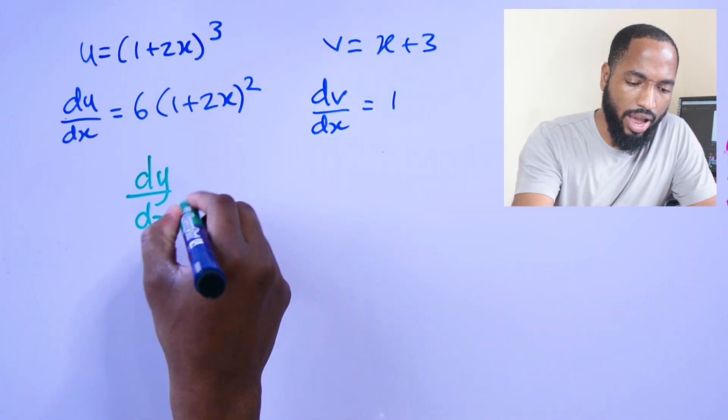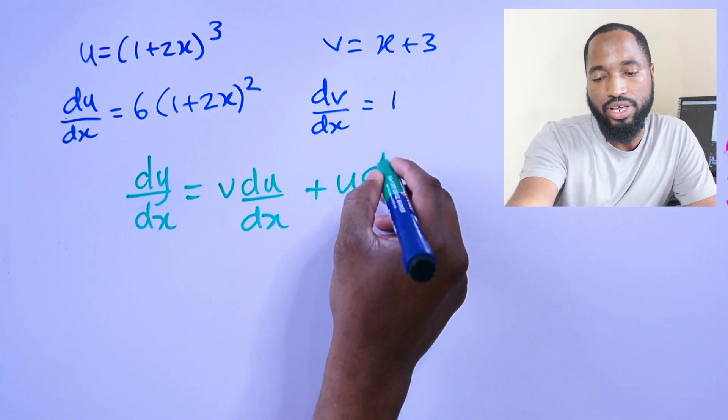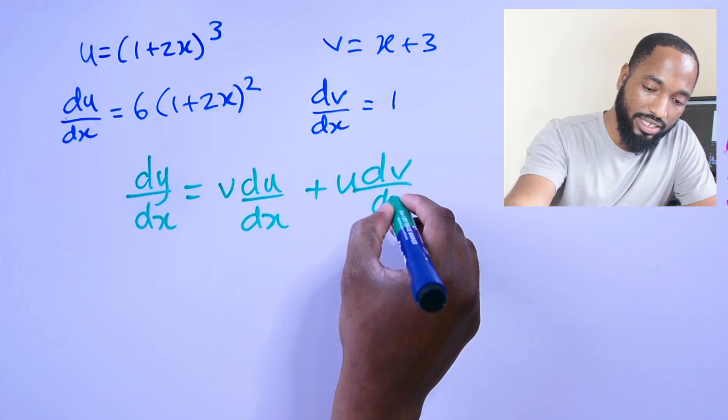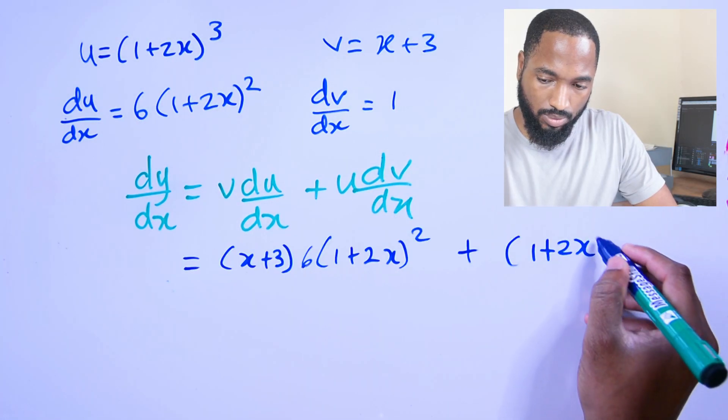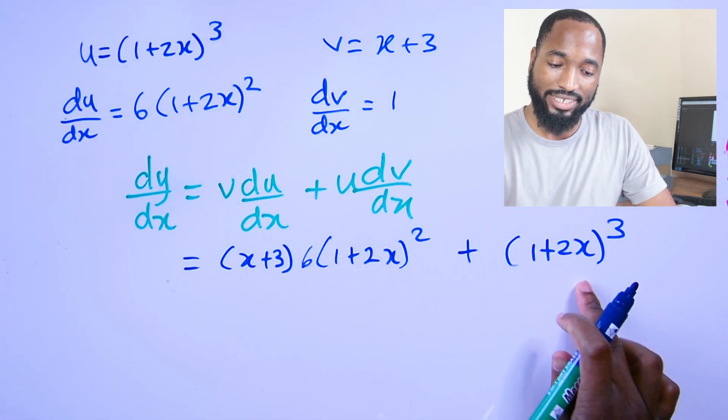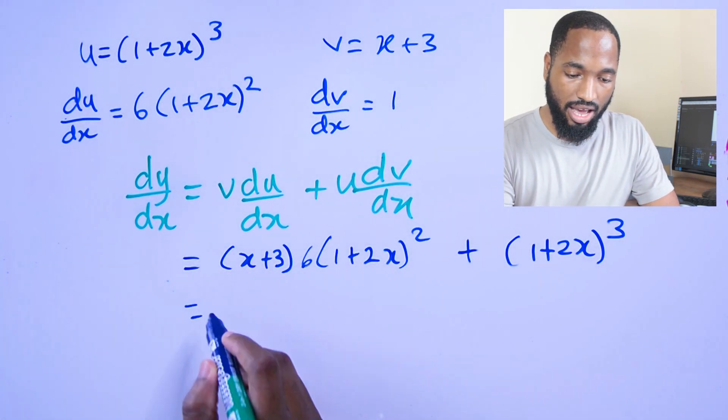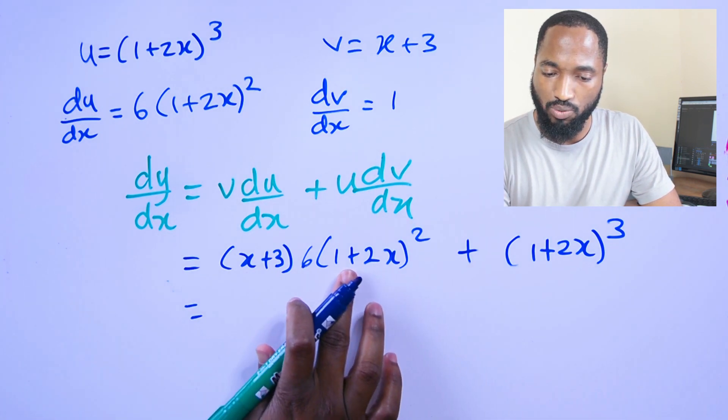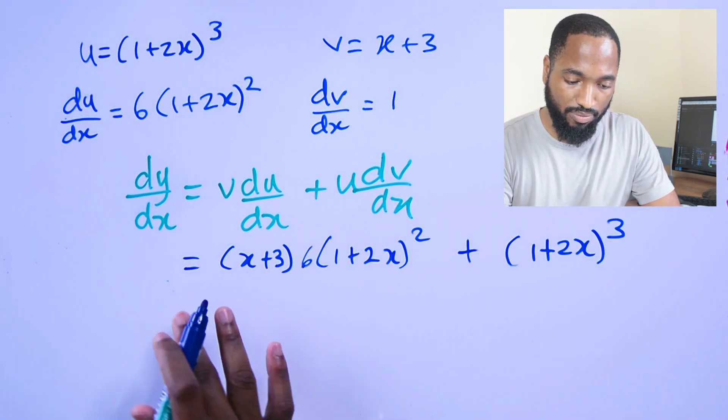Now that we have values for u and v and du/dx and dv/dx, we can just apply the product rule where dy/dx is equal to v·du/dx + u·dv/dx. When we substitute, we get this line.